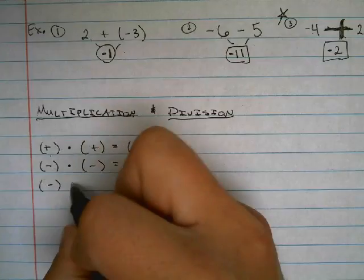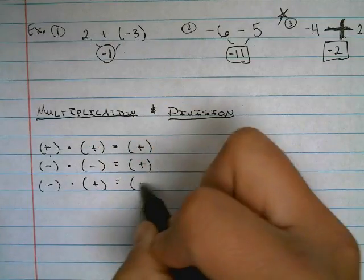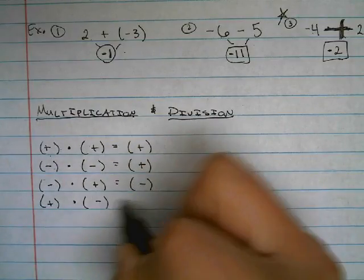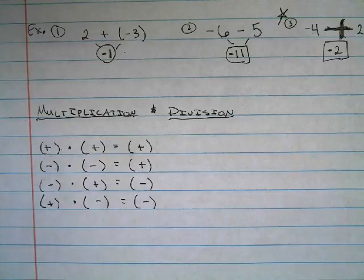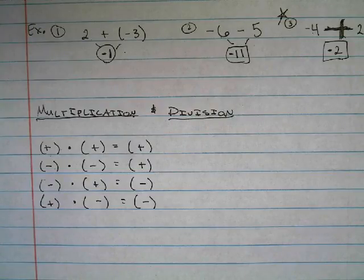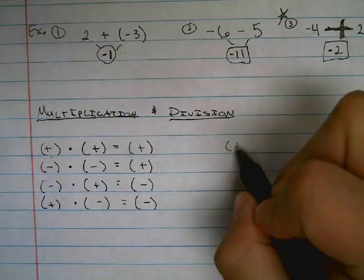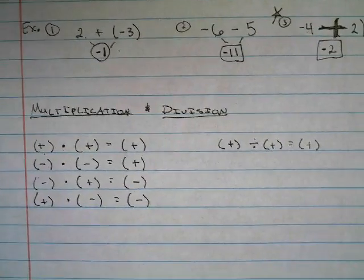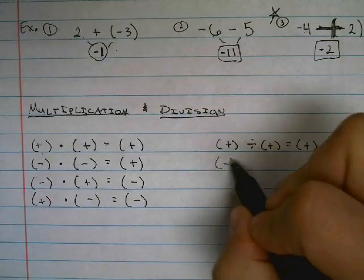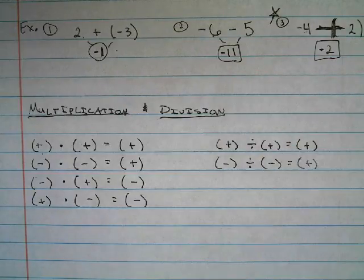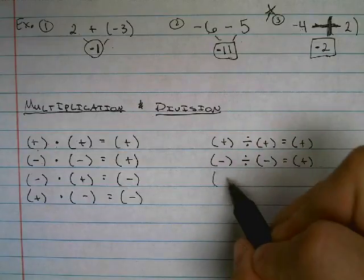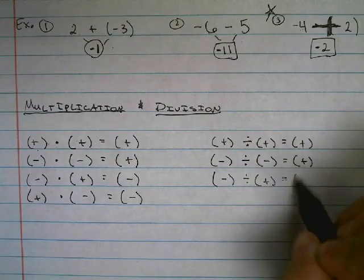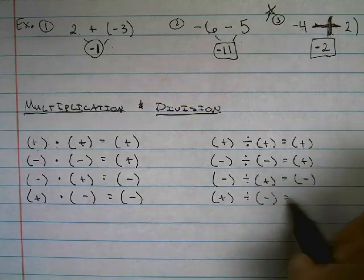When the signs are different, negative times a positive is a negative, and positive times a negative is also a negative. These same rules hold true for division: positive divided by positive is positive, negative divided by negative is positive, negative divided by positive is negative, and positive divided by negative is negative.